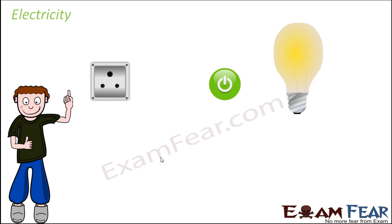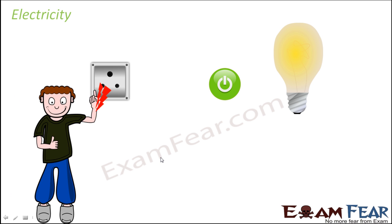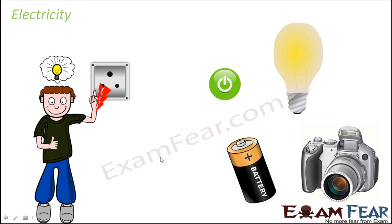Consider a situation where you have an open socket — if by mistake you touch it, you experience an electric shock due to electric current. Similarly, think of devices like cameras and batteries. Devices ranging from torches to computers to cell phones all have a cell or battery inside them. These batteries generate electric current; they produce electricity through a setup inside them, and batteries have brought about a revolution in modern technology.